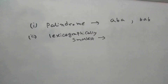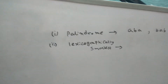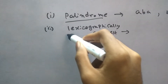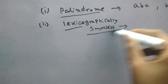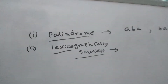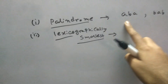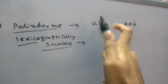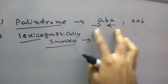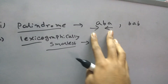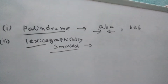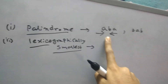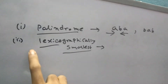Before starting, let's focus on the two main keywords mentioned in the problem: palindrome and lexicographically smallest. Most of you already know what palindrome means — if a string like ABA is read from both sides, it is exactly the same. So strings like ABA or BAB are called palindromes. We have to make this palindromic string a non-palindrome by changing exactly one character so that it is lexicographically smallest.